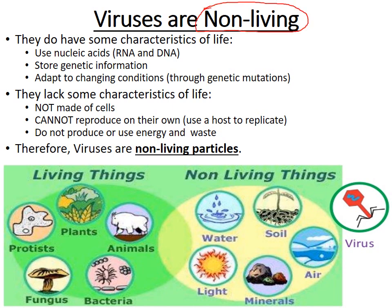Viruses are a tricky area because they do have some characteristics of life. For example, they have nucleic acids — RNA and DNA — just like living things do. In that sense, they store and use genetic information. They also adapt to changing conditions, because mutations in their RNA and DNA can lead to different adaptations in their environment.